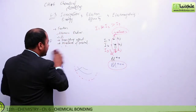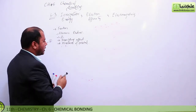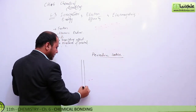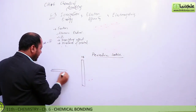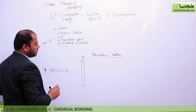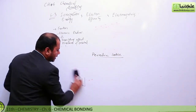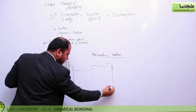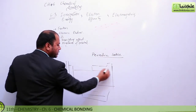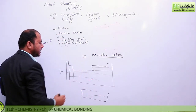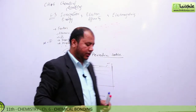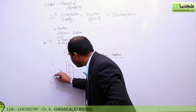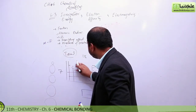Now let's talk about the trend in ionization energy across the periodic table. The periodic table has 18 groups and 7 periods. From a previous lecture, we know that going top to bottom, atomic size increases. Going left to right across a period, atomic radius decreases.